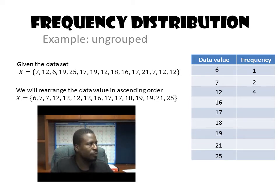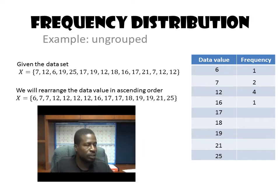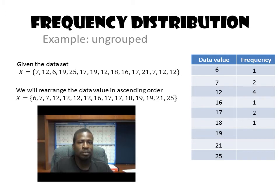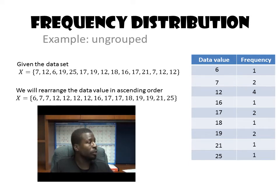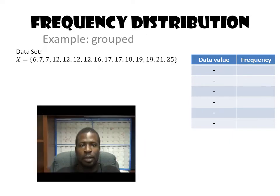16 has a frequency of 1 — it only occurs once. 17 has a frequency of 2, 18 has a frequency of 1, 19 has a frequency of 2, 21 has a frequency of 1, and 25 has a frequency of 1. And that is how you construct a frequency distribution for ungrouped data.